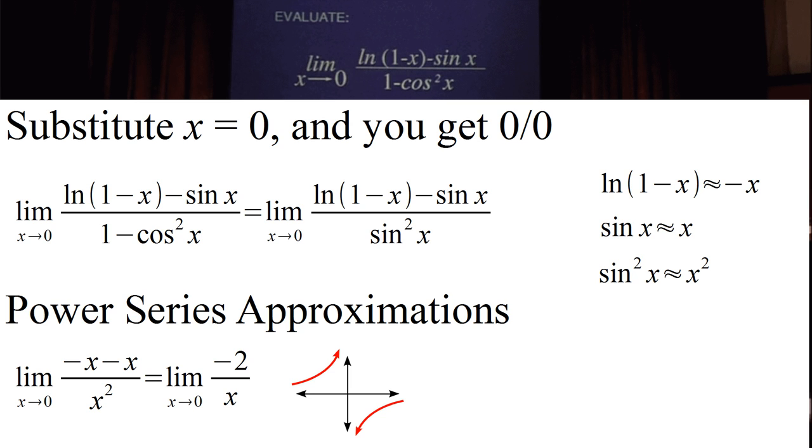And the graph of this looks roughly like this following figure. And when you consider the limit as x goes to zero, we actually find out the limit does not exist, because as we approach from the negative side, we go to positive infinity, and as we go from the positive numbers, we go to negative infinity. So the correct answer to this question, which is presented in the movie, is the limit does not exist.